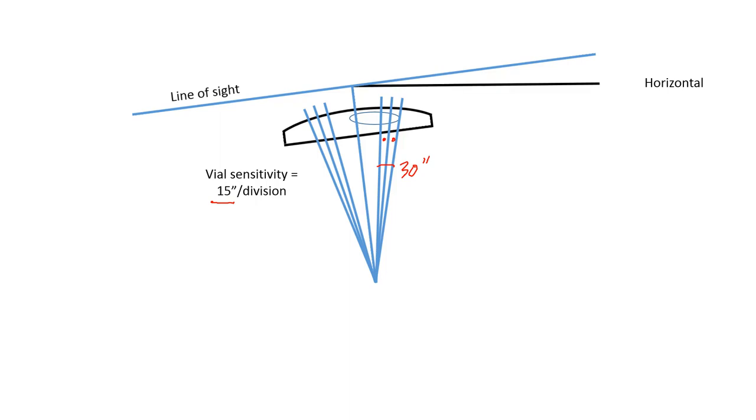You see the horizontal line is this black line. Well, it's possible then for us to determine what the vertical error is over here if I know the distance from the rod back to the instrument.